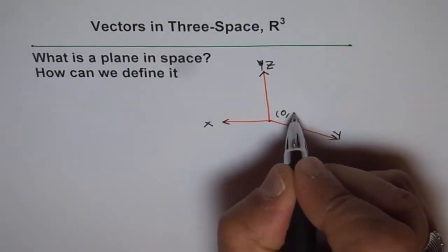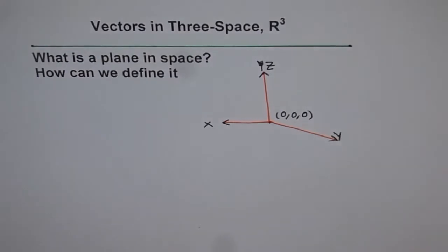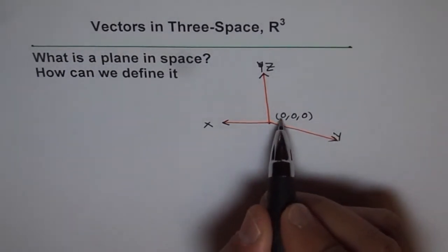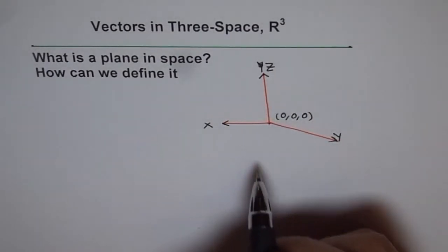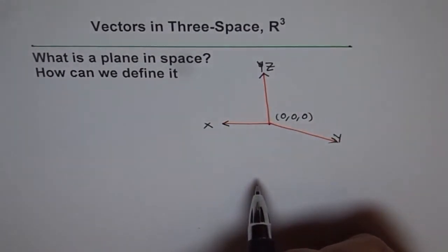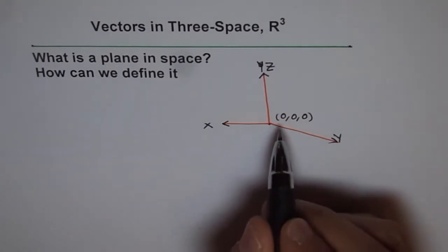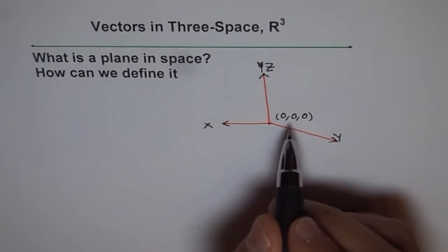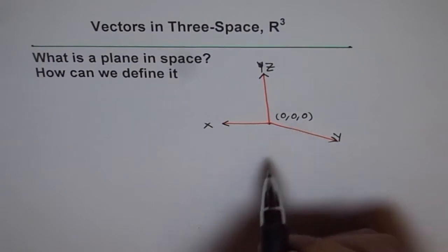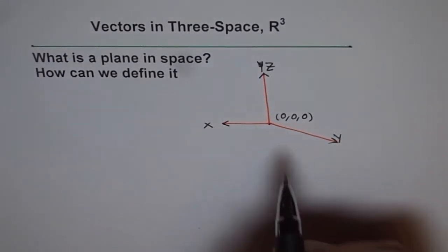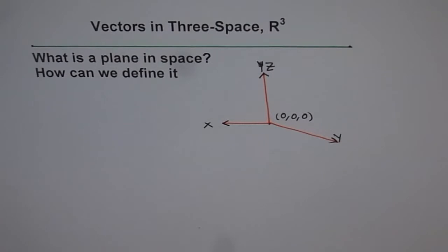We'll call it (0, 0, 0) and this is given the name ordered triple, because we need to specify every point in this coordinate system with the help of three coordinate points: X, Y and Z. So that is how we define a point in a 3D space. Now the question here is what is a plane in the space and how can we define it?